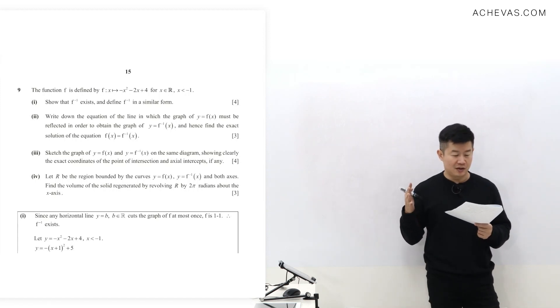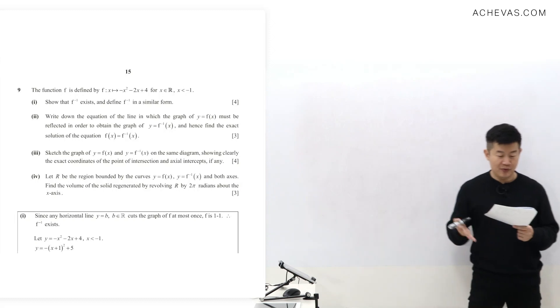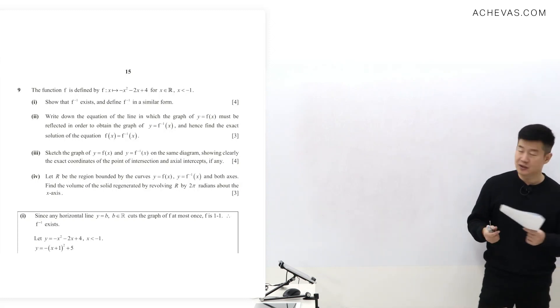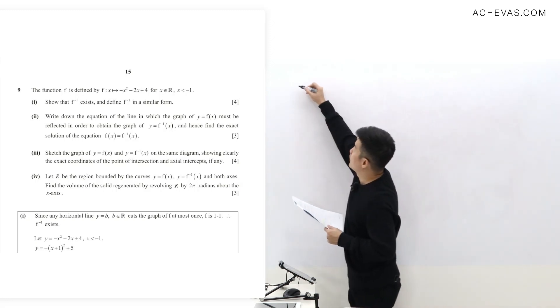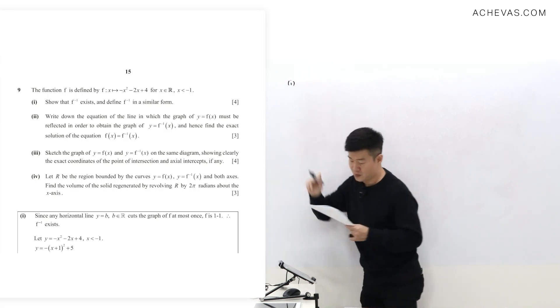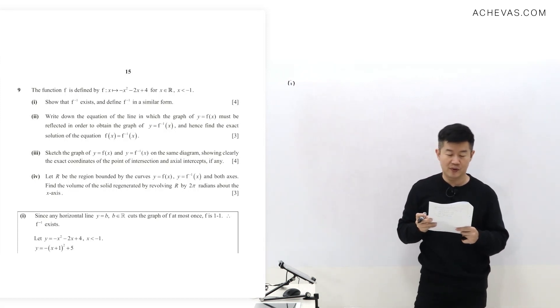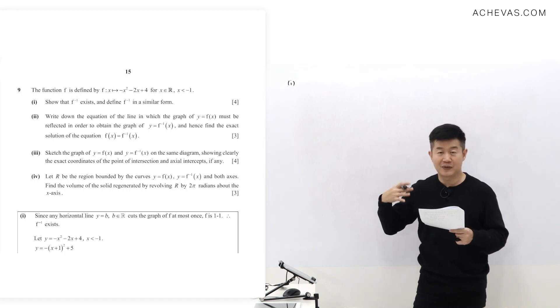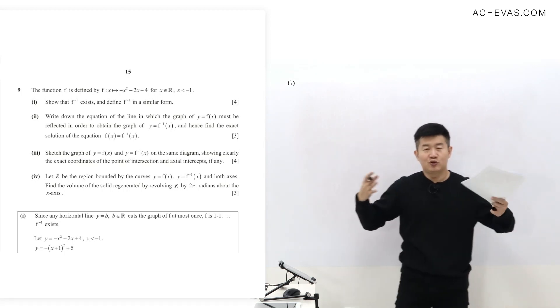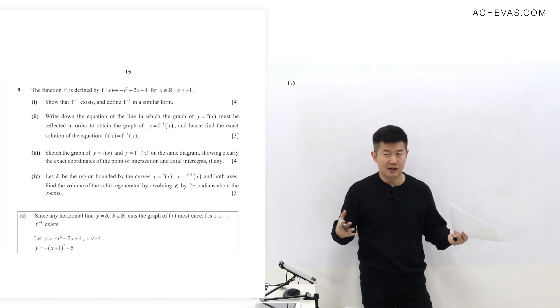So part one, according to what we have been discussing, one of the few things I'll be doing is draw the graph because I'm trying to show that f inverse exists. If you want to show that it does not exist, then I can probably use a counter example.